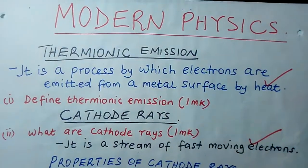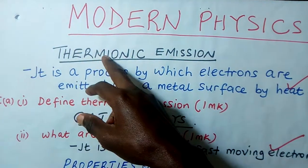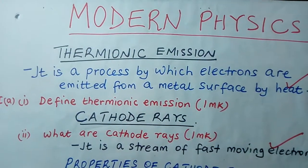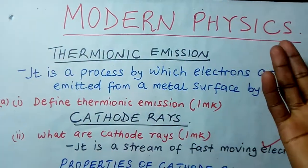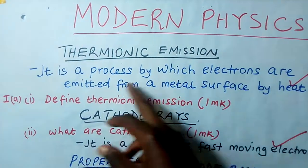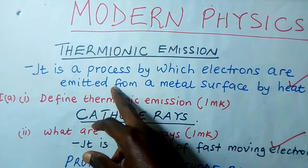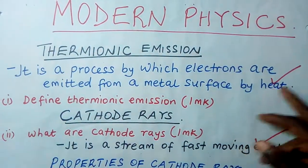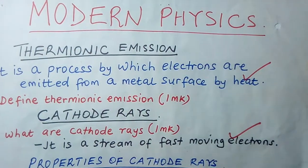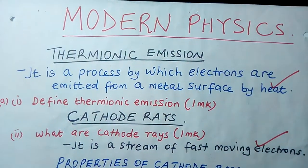One of them is thermionic emission. The word thermal — if I say thermal energy, I'm talking about heat energy. To emit is to produce. So thermionic emission simply means a process by which electrons are emitted. A process by which electrons are emitted from a metal surface by heat. Now we all know that a metal is a good conductor of heat, and the reason is it has free electrons — which means inside a metal we have free electrons.